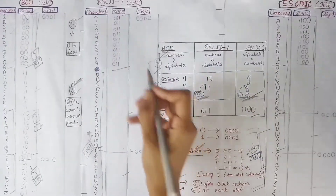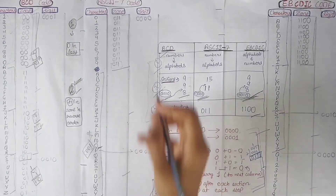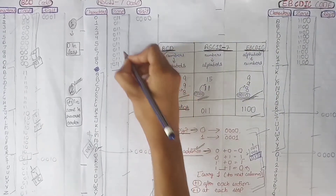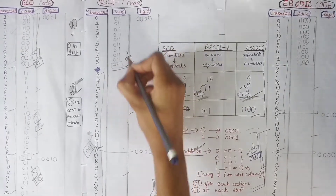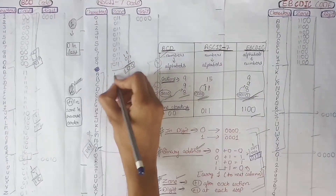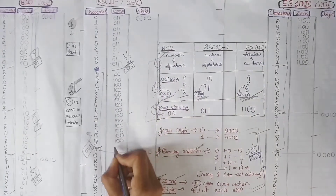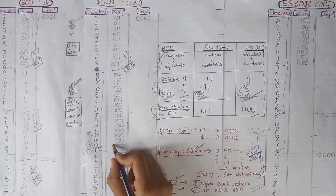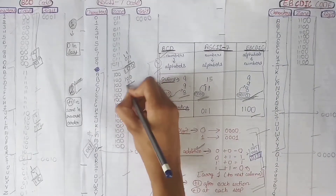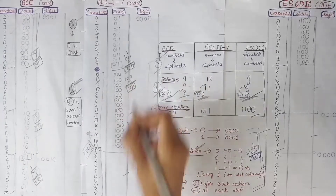Similarly for ASCII code: we add plus 1 to the current value and write the result during all of the next section. So 011 plus 1: 1+1=0, carry 1; 1+1=0, carry 1; 1+0=1 — giving us 100. We write 100 through that section. Then again adding 1: 100 plus 1 gives 0+1=1, so 101. We write 101 during all of that next section.